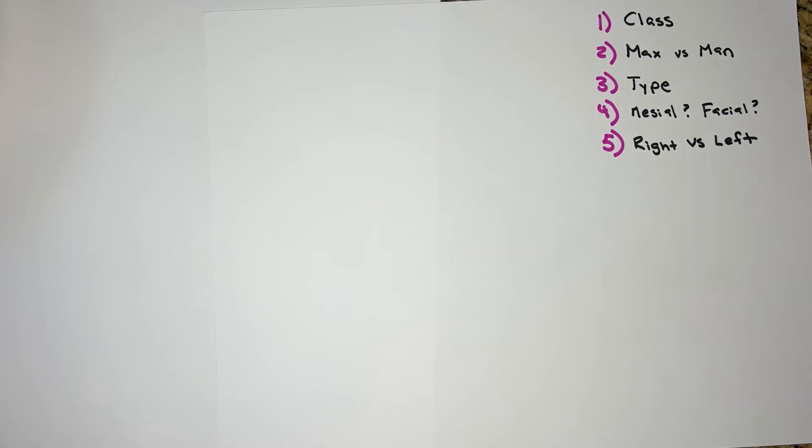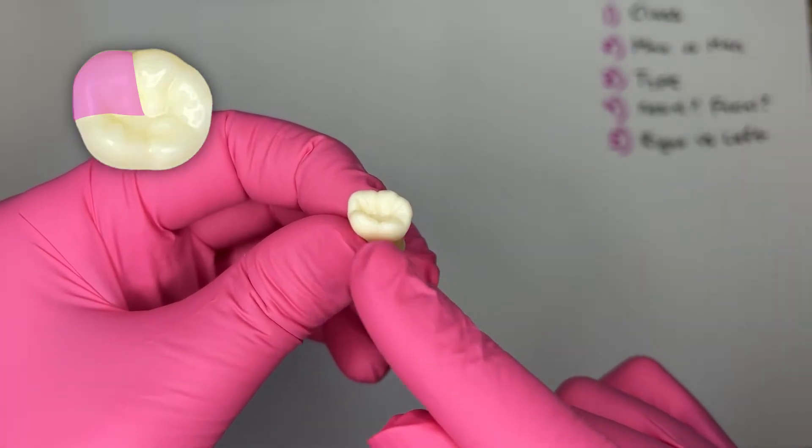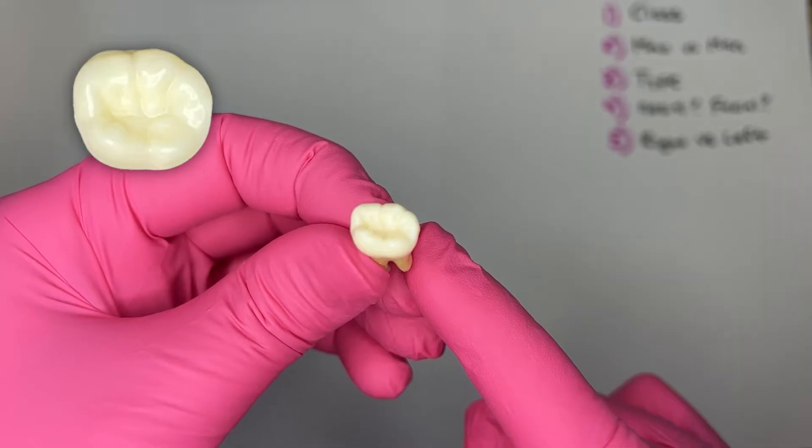Step three, what type of mandibular molar? First, second, or third? I look at the occlusal anatomy. I see, once again, five cusps. The mandibular first molar has five cusps.